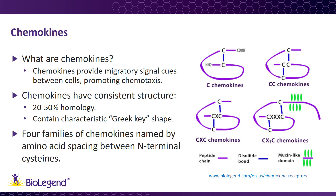Chemokines are a subset of cytokines that provide migratory signals between cells. They are aptly named for their ability to promote chemotaxis, or movement in response to a chemical stimulus. Chemokines have a fairly consistent structure, with approximately 20-50% homology to one another. They contain a sequence of four cysteines, which interact to form their characteristic Greek key shape.